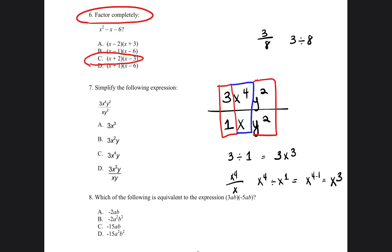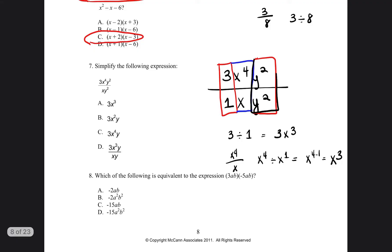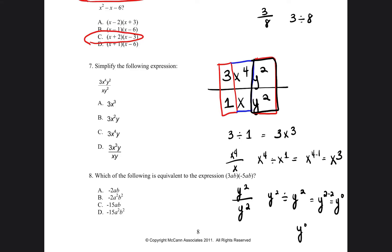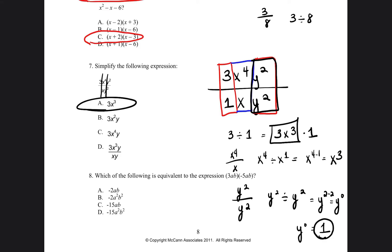Then we do y squared divided by y squared — subtracting the exponents, 2 minus 2 gives y to the zero power. Anything to the zero power is just equal to 1, so that part equals 1. So the answer is 3 times x to the third times 1, which is just 3x to the third power. Our answer is going to be A. Divide it up by separating along the lines, divide the numbers, then divide each variable that's the same.